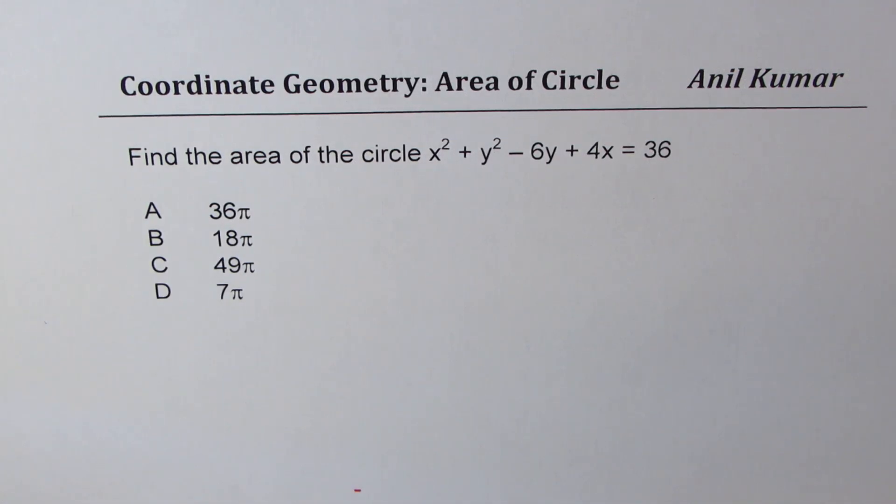I am Anil Kumar sharing with you a very important question on area of circle. The question here is, find the area of the circle x² + y² - 6y + 4x = 36.